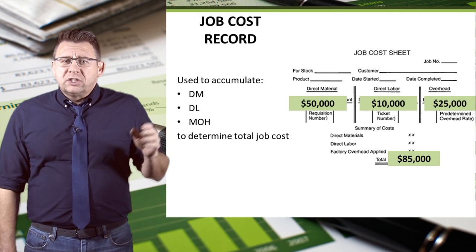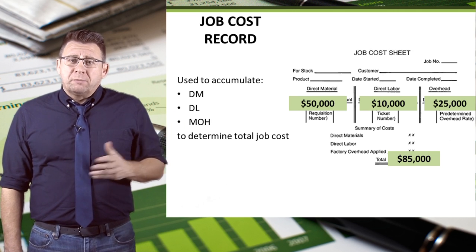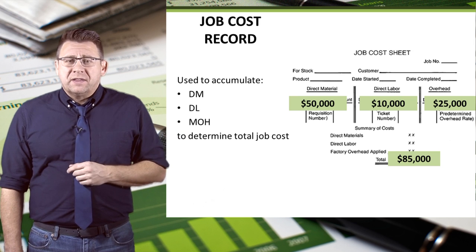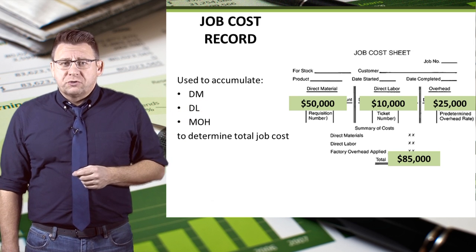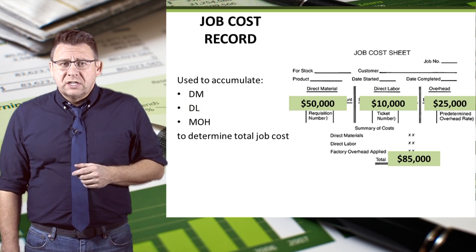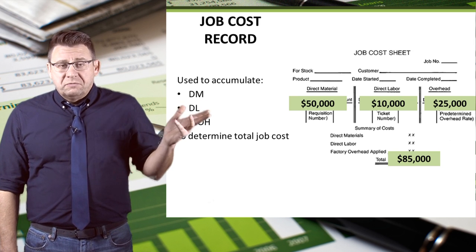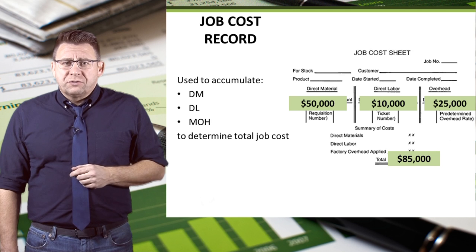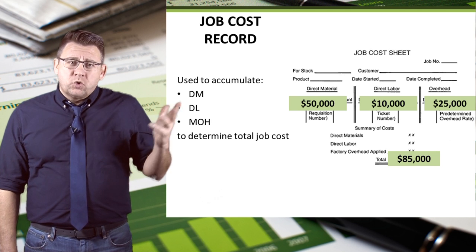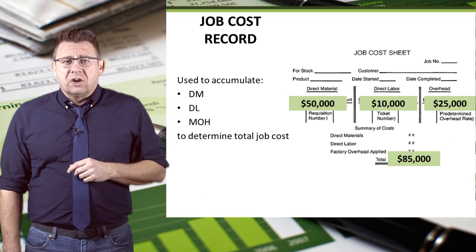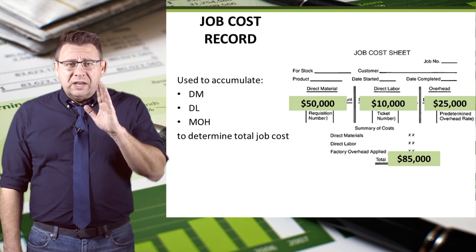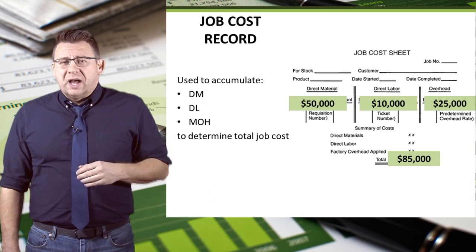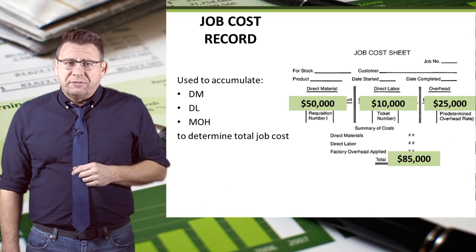A completed job cost record might look something like this: $50,000 for direct materials, $10,000 for direct labor, and $25,000 for manufacturing overhead, making the total job cost $85,000.